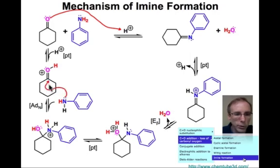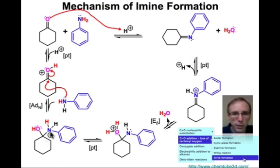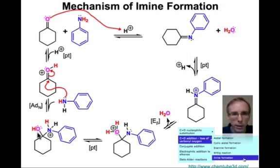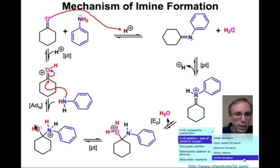The nucleophile will be our nitrogen from our aniline, and that will make the tetrahedral intermediate shown here. You can see the positive charges on nitrogen. We need to eliminate the elements of water from this tetrahedral intermediate, so we can make the hydroxyl a better leaving group by protonating it. If we take one of the protons from that nitrogen, that intramolecular proton transfer gets us set up to do the beta elimination.